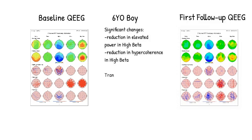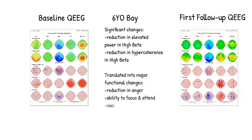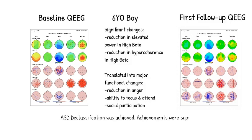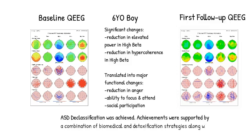A reduction in elevated power in high beta and a reduction in hyper coherence in high beta were observed. These translated into major functional changes: a reduction in anger, an ability to focus and attend, and social participation. ASD declassification was achieved.